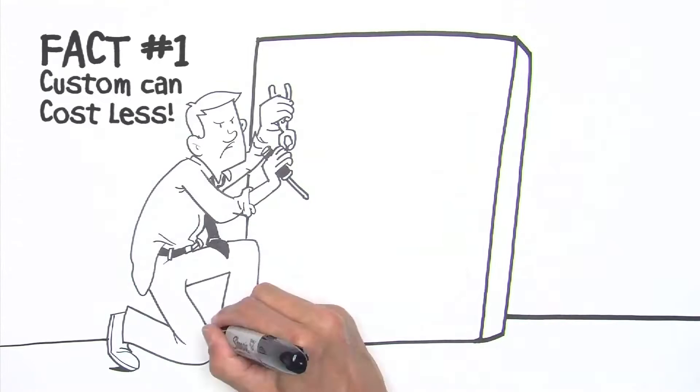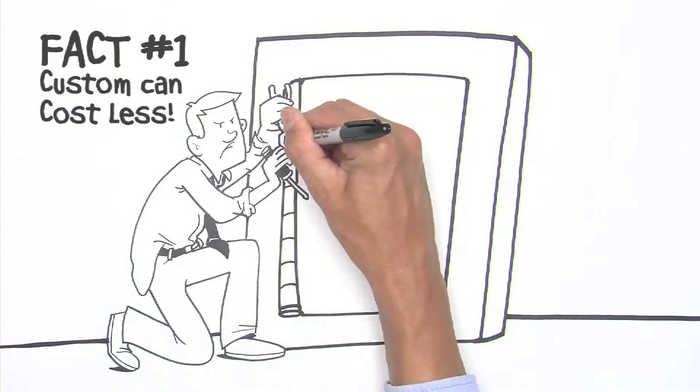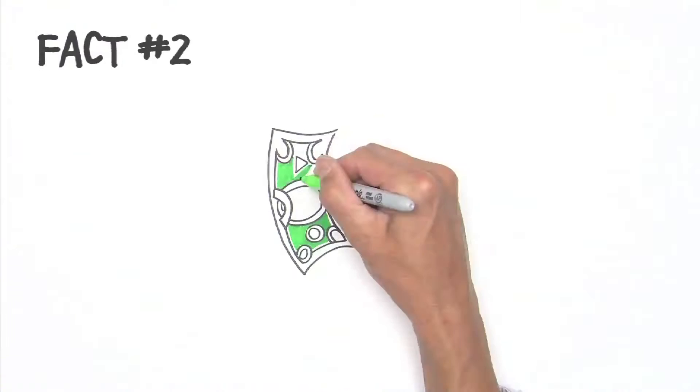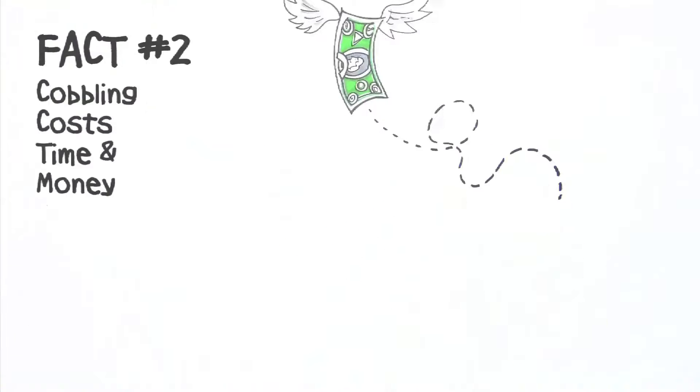Fact number one: custom can actually cost less than off-the-shelf if off-the-shelf means you or the end user has to keep cobbling with the darn things to make them work. Fact number two: cobbling costs time and money.